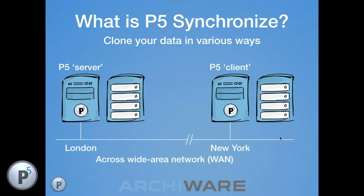Advancing the topology, we're now going across a WAN between London and New York. If a customer has more than one office, they can use Synchronize to replicate data between locations. A VPN or firewall configuration is typically needed to allow one P5 instance to talk to another, since data will be going across a public network.